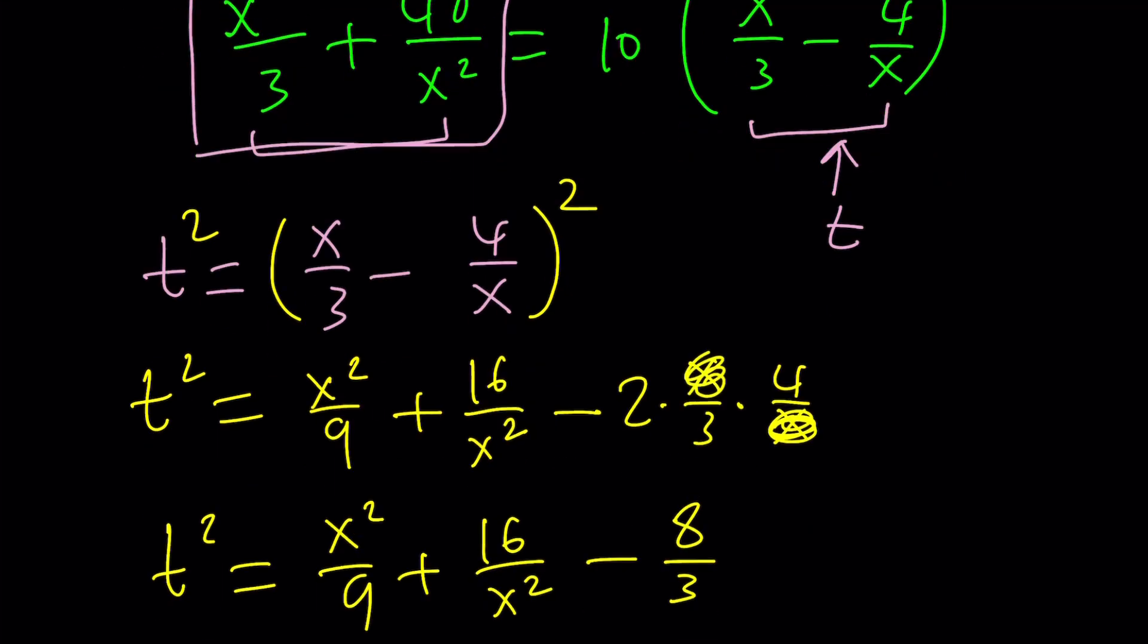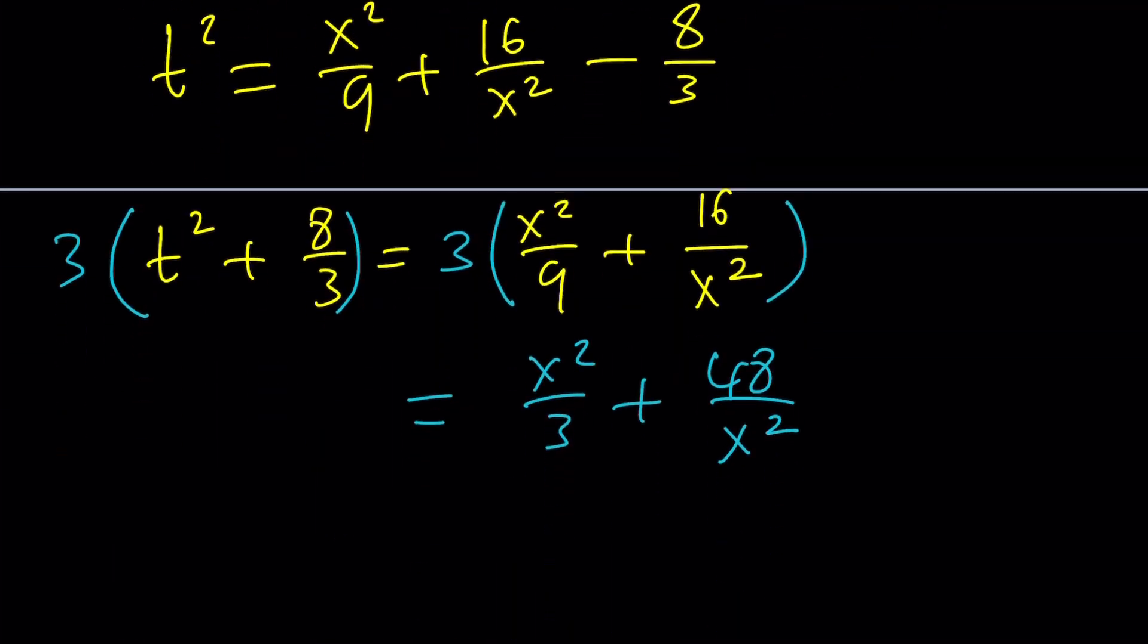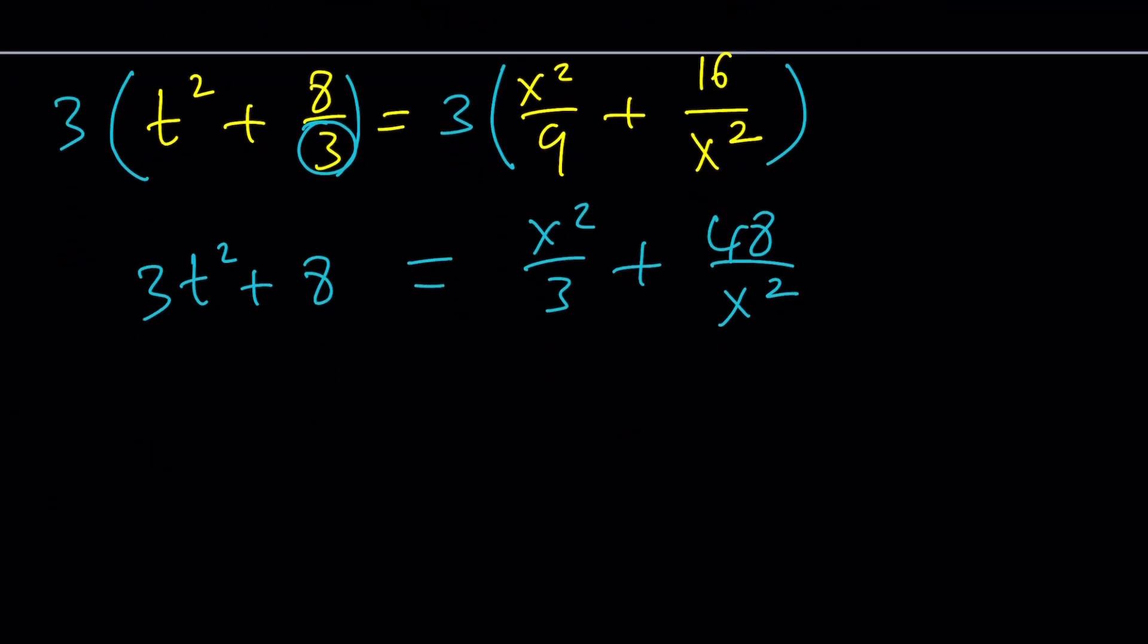So, we can write it in terms of t, which is actually going to be 3t squared plus 8. It's nice because the 3s cancel out. So, now, let's get back to the problem, x squared over 3, the original one, and then use substitution to see what happens and then we're going to proceed with that.